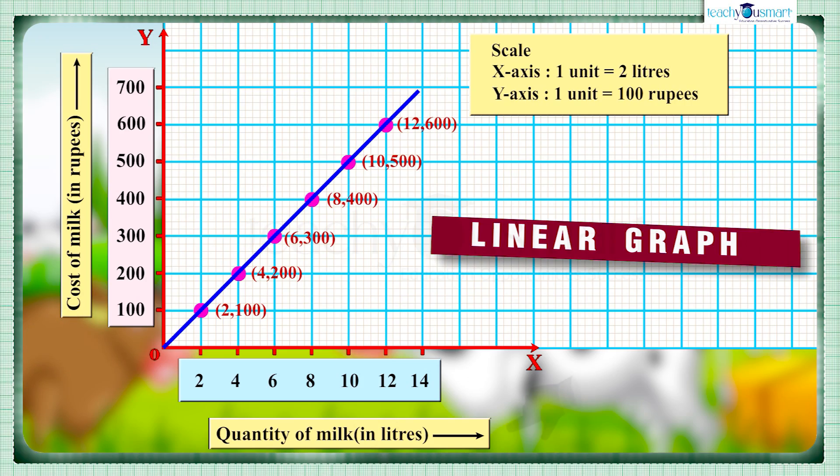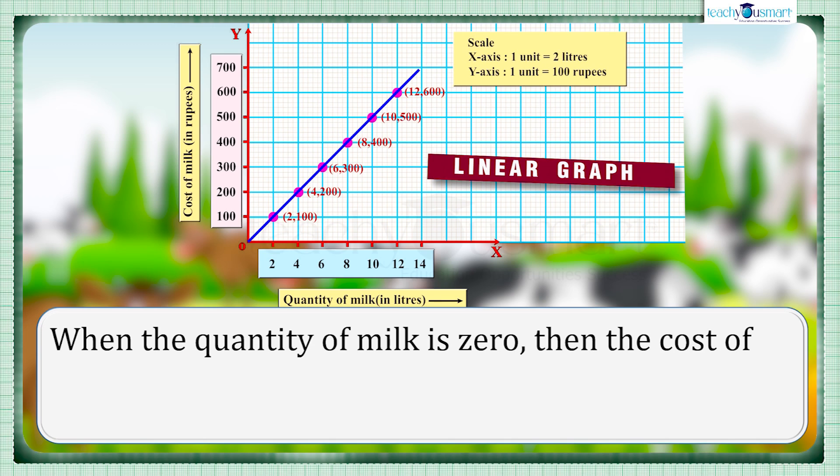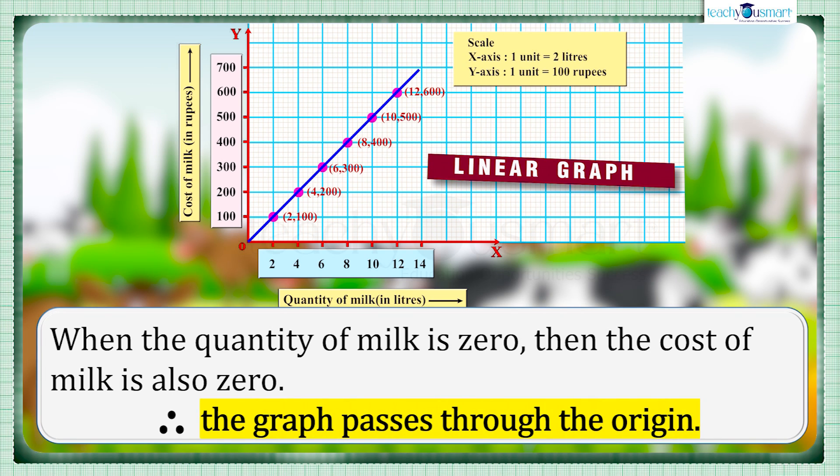When there is no milk produced, that is, the quantity of milk is zero, then the cost of milk is also zero. That's why the graph passes through the origin. And from this graph we can obtain some more information.